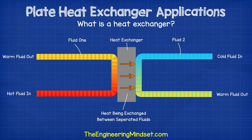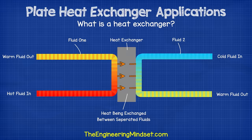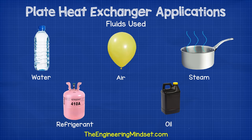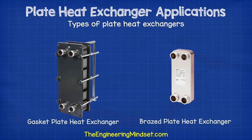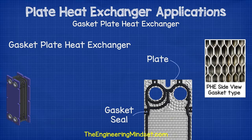Let's briefly recap on what a heat exchanger is and how these plate types work. A heat exchanger is a device used to transfer thermal energy from one fluid to another. Both fluids are completely separated — they never meet or mix. The fluids can be anything such as water, oil, refrigerants, etc. The fluids must be at different temperatures to transfer heat, and heat always flows from hot to cold. There are two main types of plate heat exchangers: gasket type and brazed plate type.